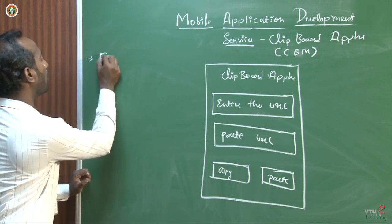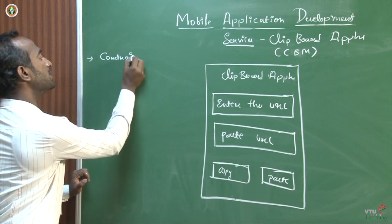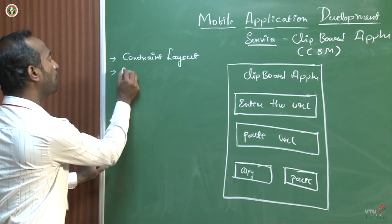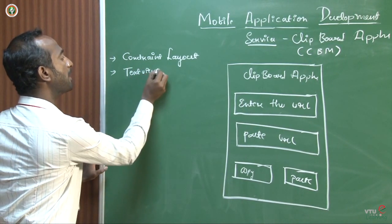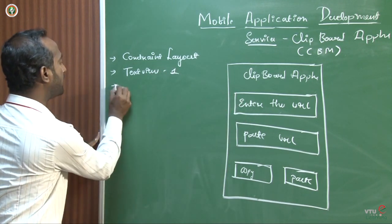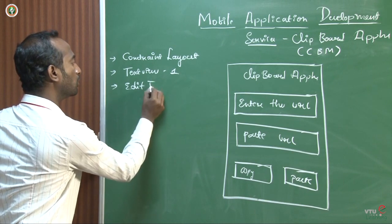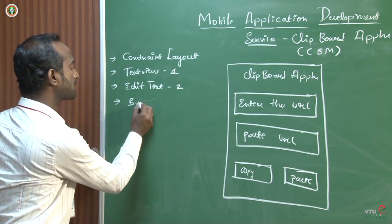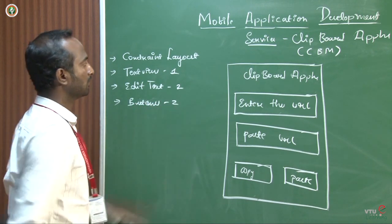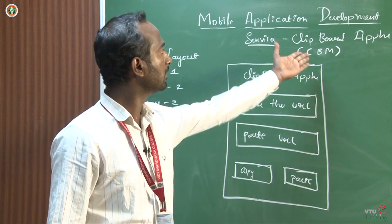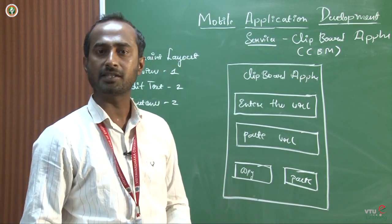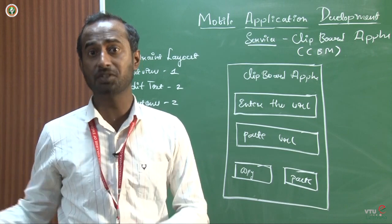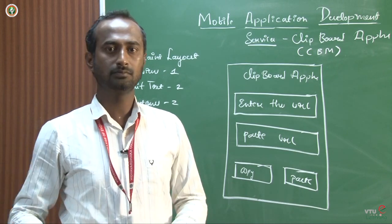Coming to the design requirements, I will go with the constraint layout. I am not going to change the layout because the design is very simple. First I need one text view for the name purpose. Next I need two plain texts or edit texts to get data and to copy-paste. Next I need two buttons. The main service I am going to use in this particular application is clipboard manager. We have hundreds of this kind of services which may be used in Android application development.